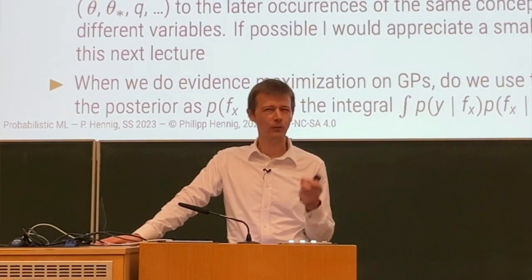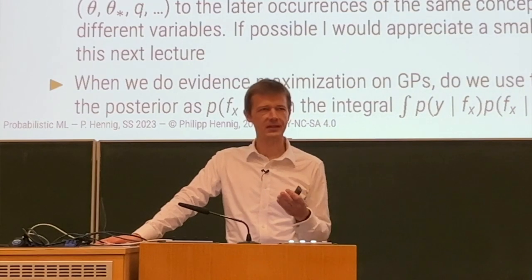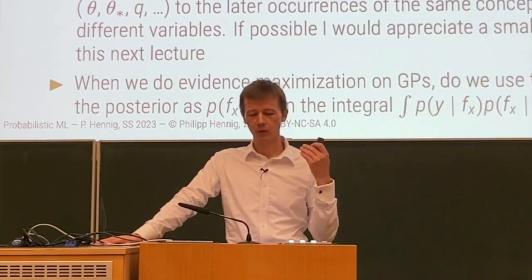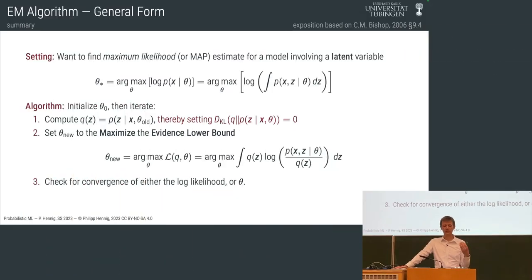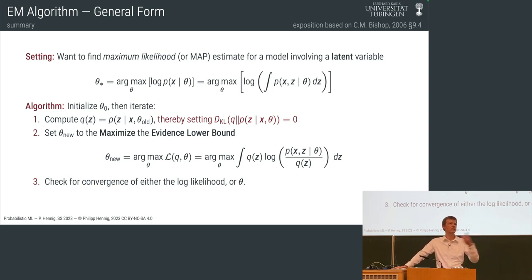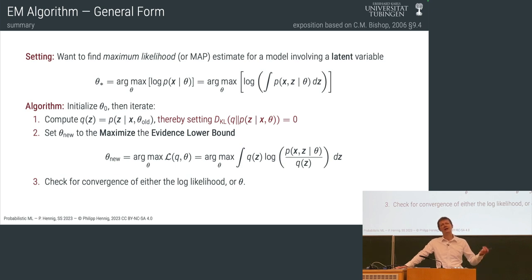Let's recall a bit what we did last time with three slides. We got the motivation for this entire part of the course: what do we do with the parameters in our probabilistic models? If we decided to do probabilistic modeling, assigning probability measures to variables and trying to compute posteriors, we invariably still find parameters in our model — choices we have to make.